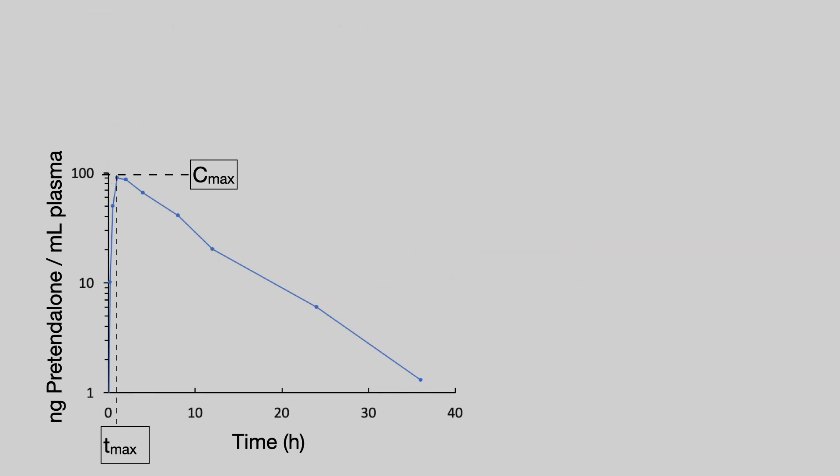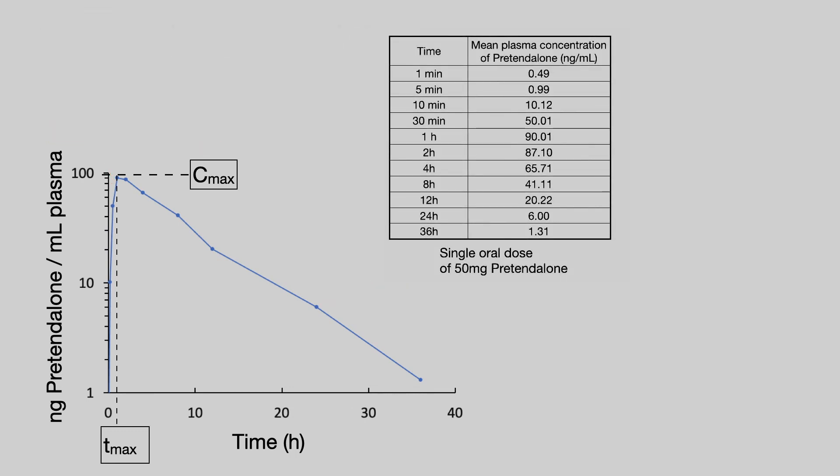If we look at the table of data, you can see that the C-max, the maximum concentration of drug, is 90.01 nanograms per mil and that occurs at a T-max of one hour.